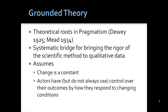Grounded theory begins with situating the research in a framework or a set of premises. The environment, social or natural, is always changing. Actors have some control over their outcomes in terms of how they respond to the changing conditions. It's all about processes, and our observations allow us to create hypotheses about relationships and then to proceed based on these.